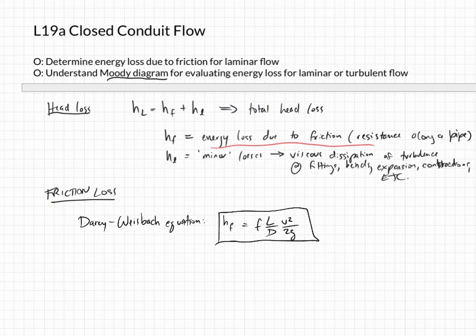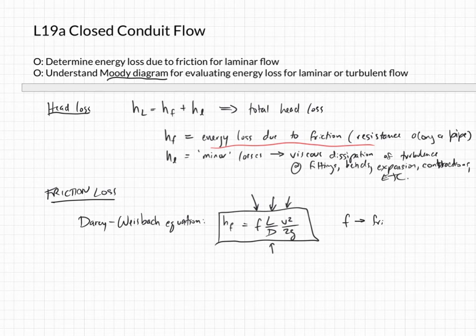This Darcy-Weisbach equation tells you how much energy you're going to lose for a given length of pipe of a certain diameter with the velocity flowing at a certain rate. This F is a friction factor and it depends on a lot of different things — that's kind of what we're going to be spending the rest of this class talking about. It's usually on the order of 1/50 or 1/100, so something like 0.01 or 0.02. I don't think you'll ever get higher than about 0.03.